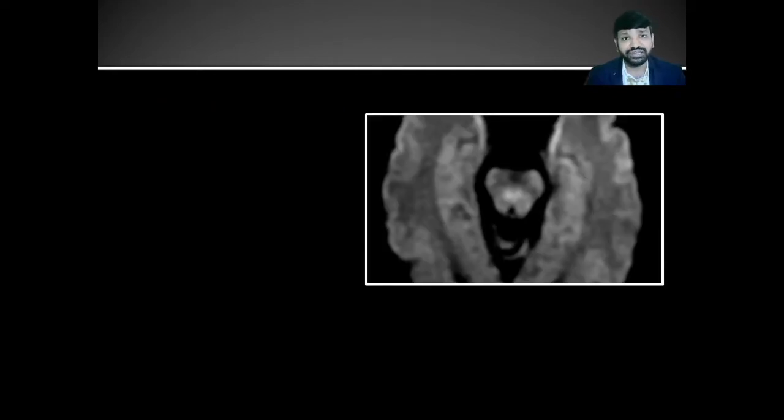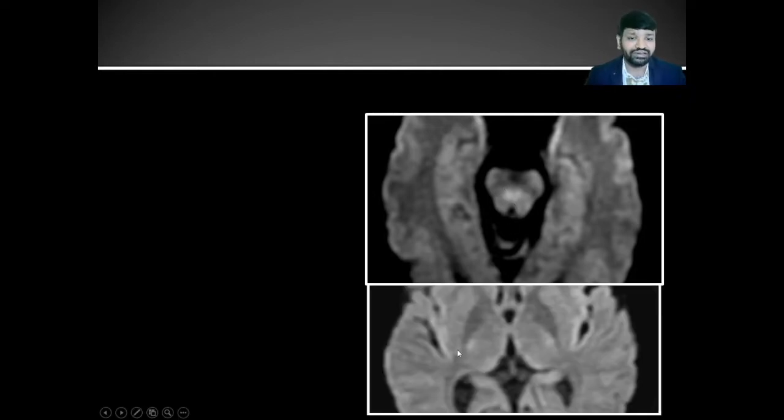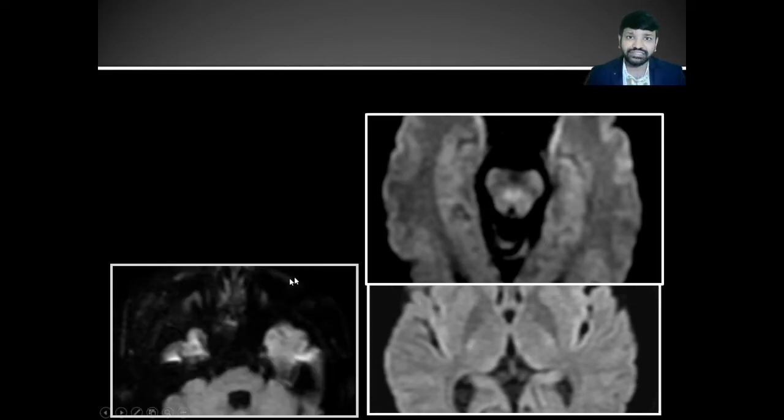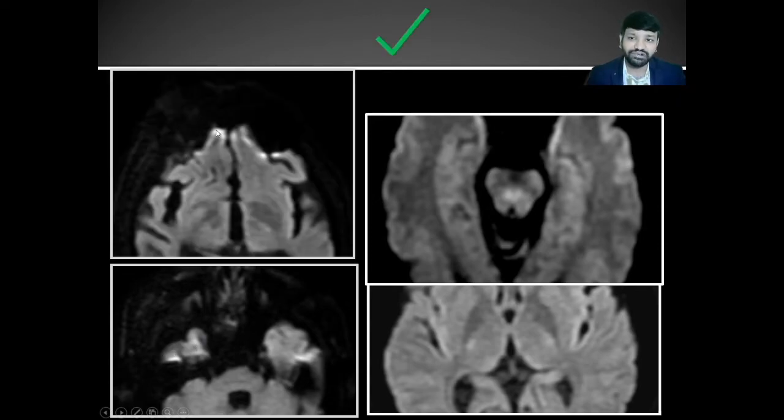Apart from the T2 shine-through, there are some other areas where normal bright signal can be present. One common area is the center of the midbrain or along the posterior limbs of internal capsules along the corticospinal tract. Other areas along the basal temporal lobes in the cortices or along the basal frontal lobe in the cortices. This occurs because of artifactual bright signal secondary to anisotropy effects because of EPI sequence.